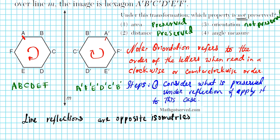How about angular measure? Even though the orientation is reversed, are the sizes of the angles altered? No — the measures are identical. Angle A is congruent to angle A prime, angle B is congruent to B prime. There is no change in the measurement of the angles. So for option 4, angle measures are preserved. Our answer is option 3 — that is the only property not preserved under line reflection.